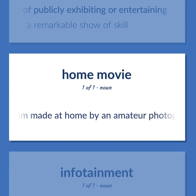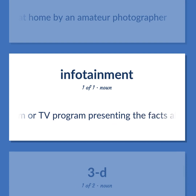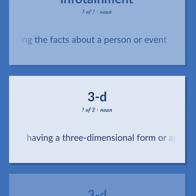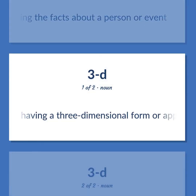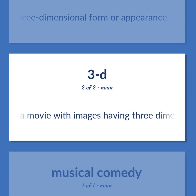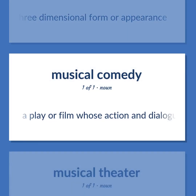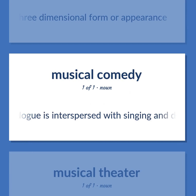Movie types: A film made at home by an amateur photographer. A film or TV program presenting the facts about a person or event. Having a three-dimensional form or appearance. A movie with images having three-dimensional form or appearance. A play or film whose action and dialogue is interspersed with singing and dancing.